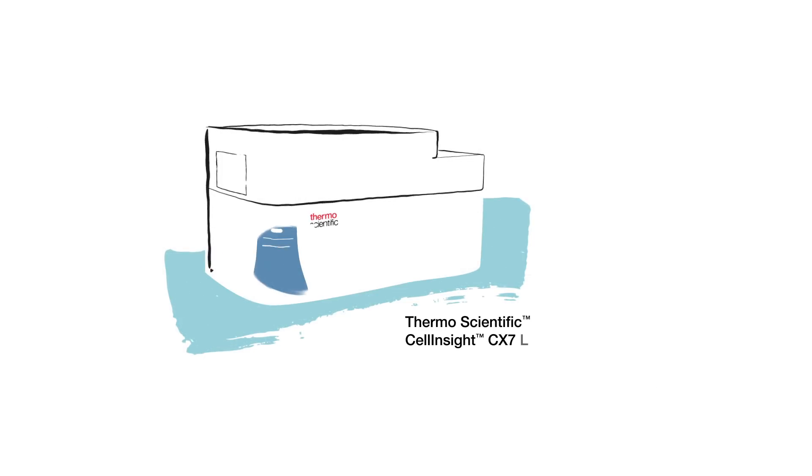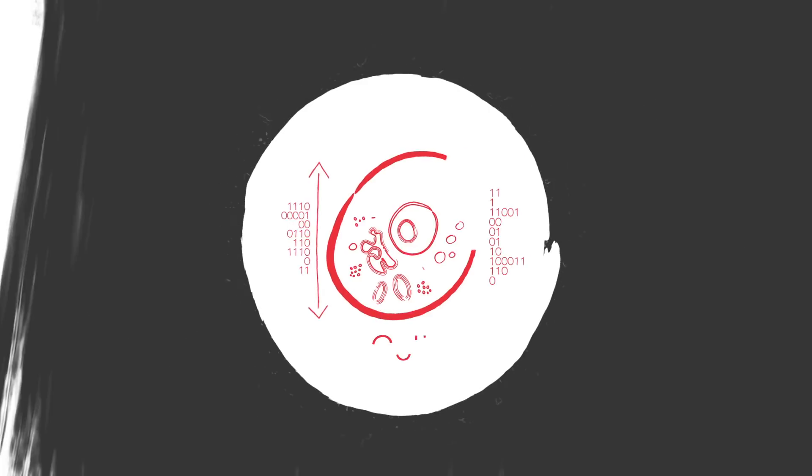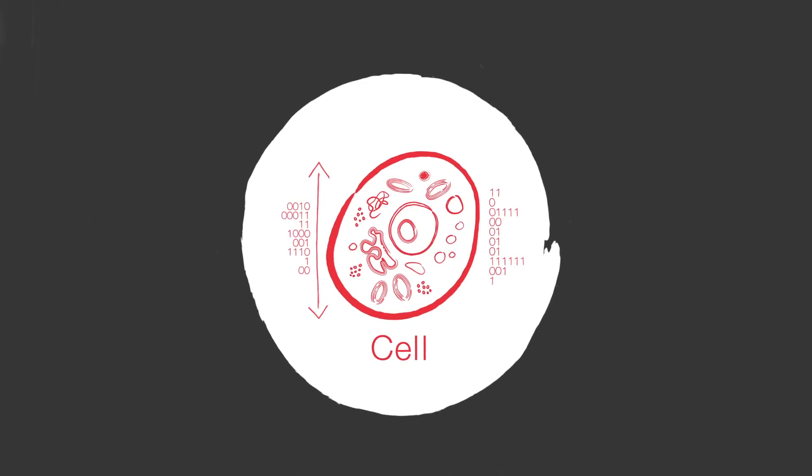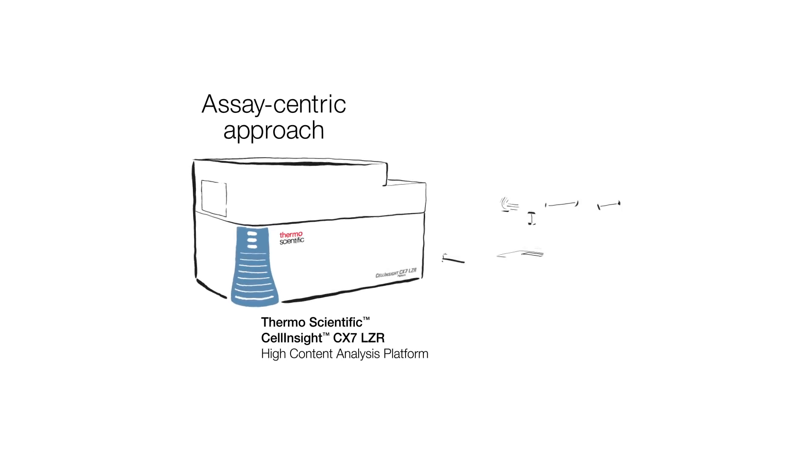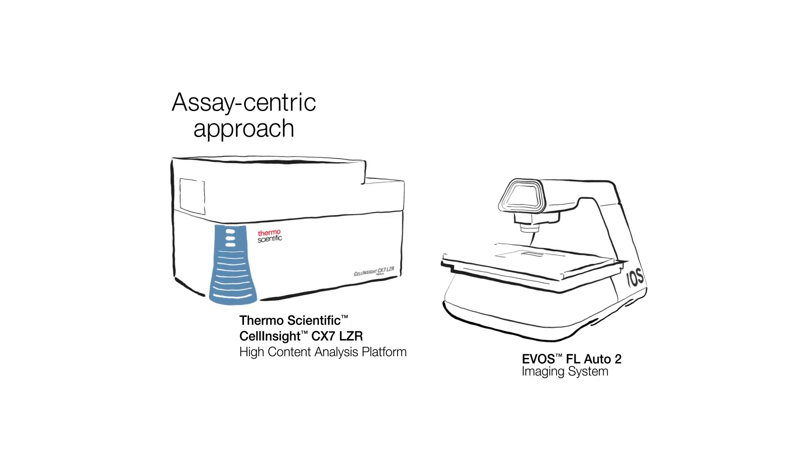HCA platforms focus on high resolution imaging and the parallel analysis that goes along with the imaging. This assay-centric approach to understand cell level phenotypes is more closely related to a high end automated microscope than a lower resolution plate reader.